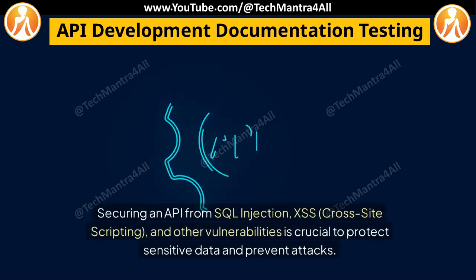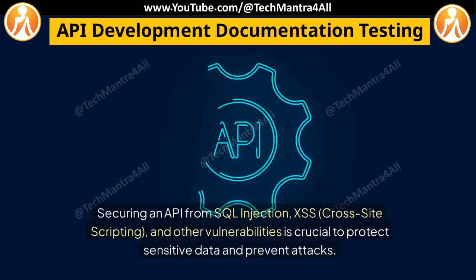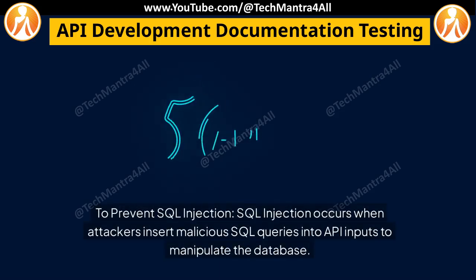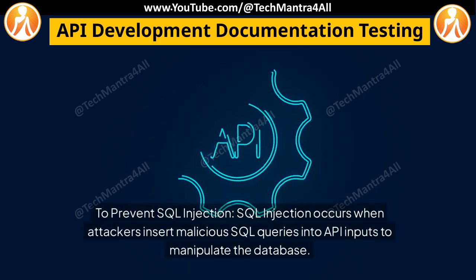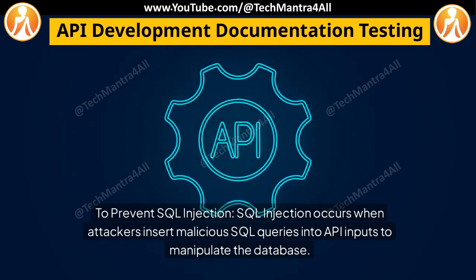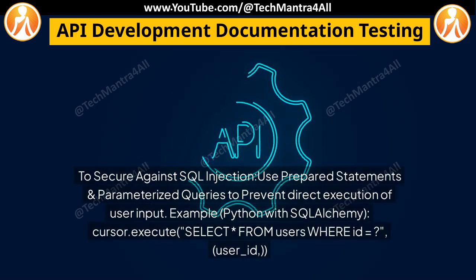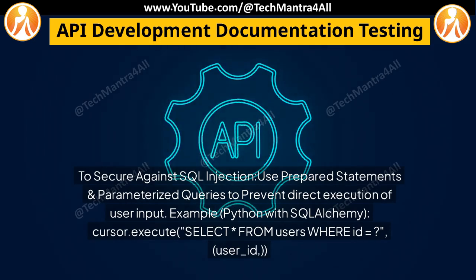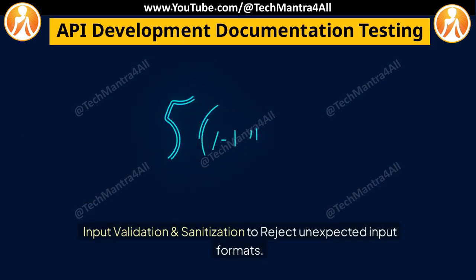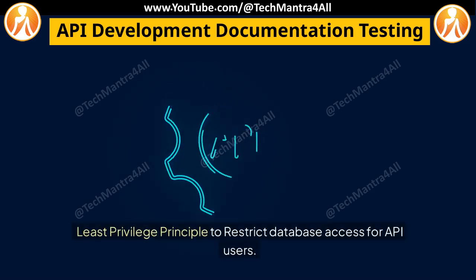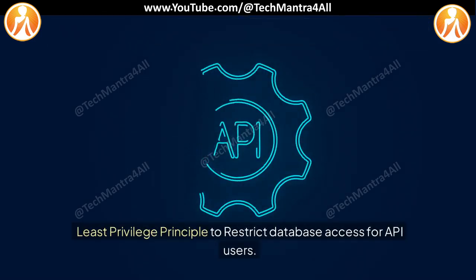How do you secure an API from common vulnerabilities like SQL injection and XSS? Securing an API from SQL injection, XSS (cross-site scripting), and other vulnerabilities is crucial to protect sensitive data and prevent attacks. SQL injection occurs when attackers insert malicious SQL queries into API inputs to manipulate the database. To secure against it, use prepared statements and parameterized queries to prevent direct execution of user input, along with input validation and sanitization to reject unexpected input formats, and the least privilege principle to restrict database access for API users.